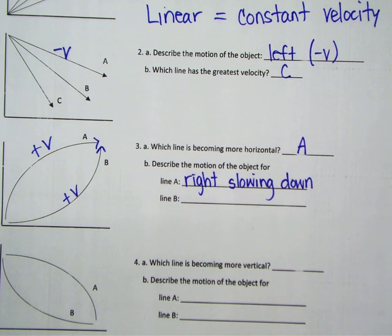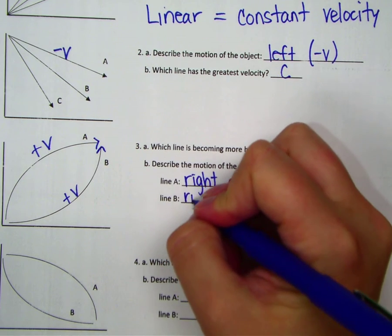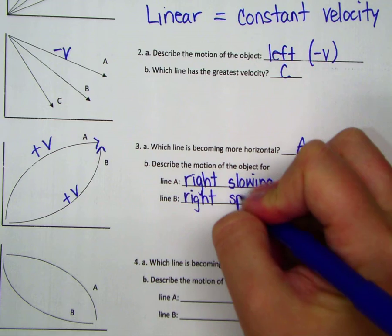If you run a race, you're standing, right? You're vertical. So the faster you're going, the more vertical you get. So line B is moving to the right and speeding up.